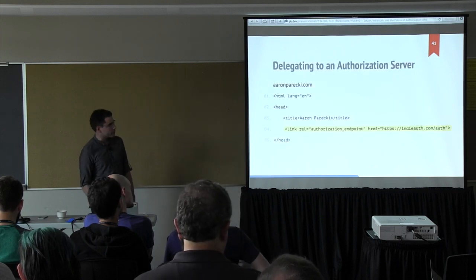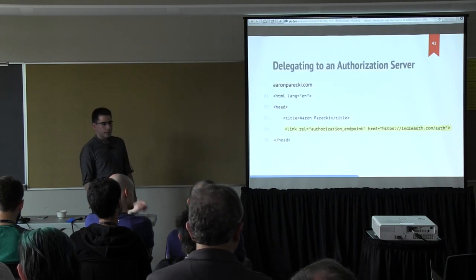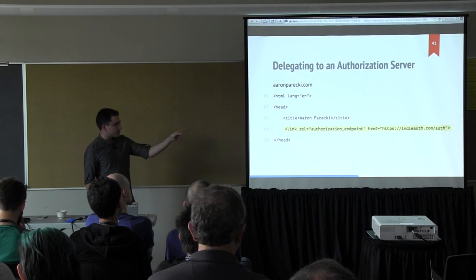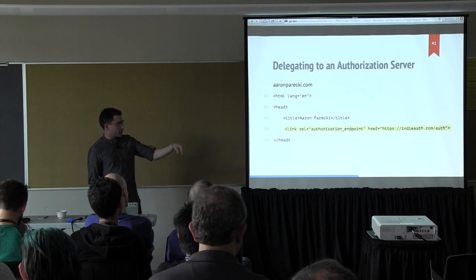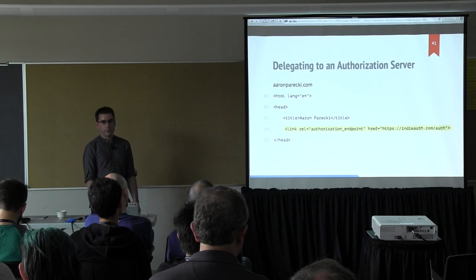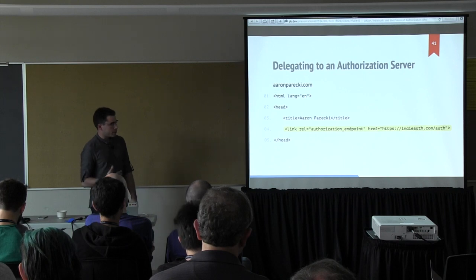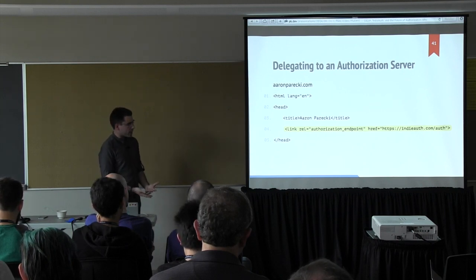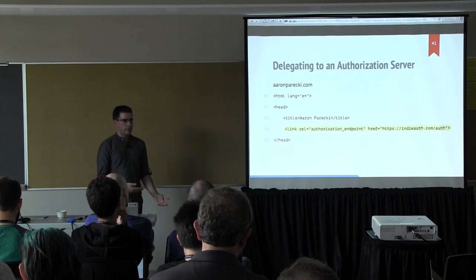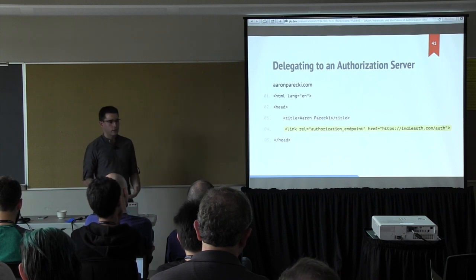The user — this is the identity layer added to OAuth 2 by IndieAuth — I've chosen to use the indieauth.com authorization server. That's a decision the user makes by delegating to that from their website. If you look at the source code of my website, you will see a link tag with rel equals authorization endpoint pointing to indieauth.com. As a user, I get to choose which authorization server to use — I can point to indieauth.com or write my own.